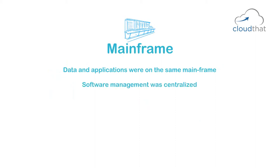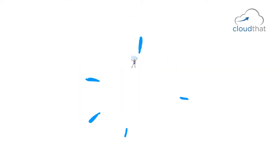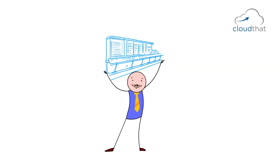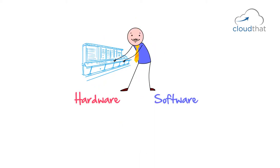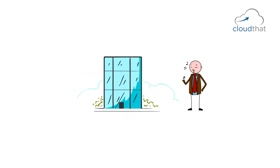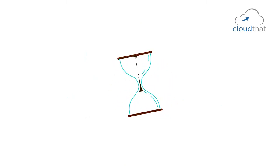The main advantages were: data and applications were on the same mainframe, software management was centralized, and the same vendor provided both hardware and software. Mainframe providers were responsible for everything — they gave you both hardware and software and handled the maintenance, making IT management easier for corporations. Then from mainframes, we entered the PC era.